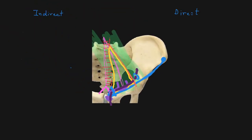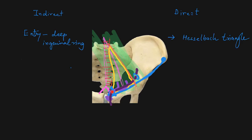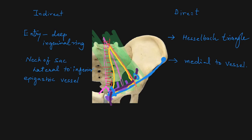Now we see the differences between direct and indirect inguinal hernia. The entry of content in indirect inguinal hernia is through the deep inguinal ring, while in direct hernia it is through Hesselbach's triangle. In indirect hernia the neck of the sac lies lateral to the inferior epigastric artery, whereas in direct hernia the neck of the sac lies medial to the inferior epigastric artery.